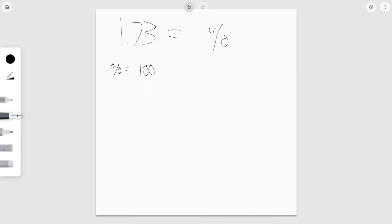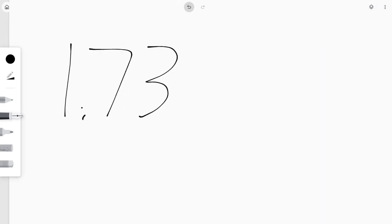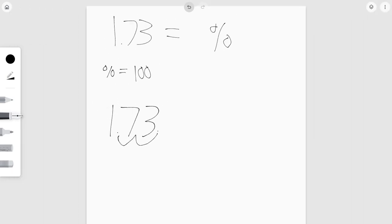Alright, let's keep in mind that a percent is equal to 100. So to answer this problem, how to turn 1 and 73 hundredths into a percent, we just move this decimal point to the very right.